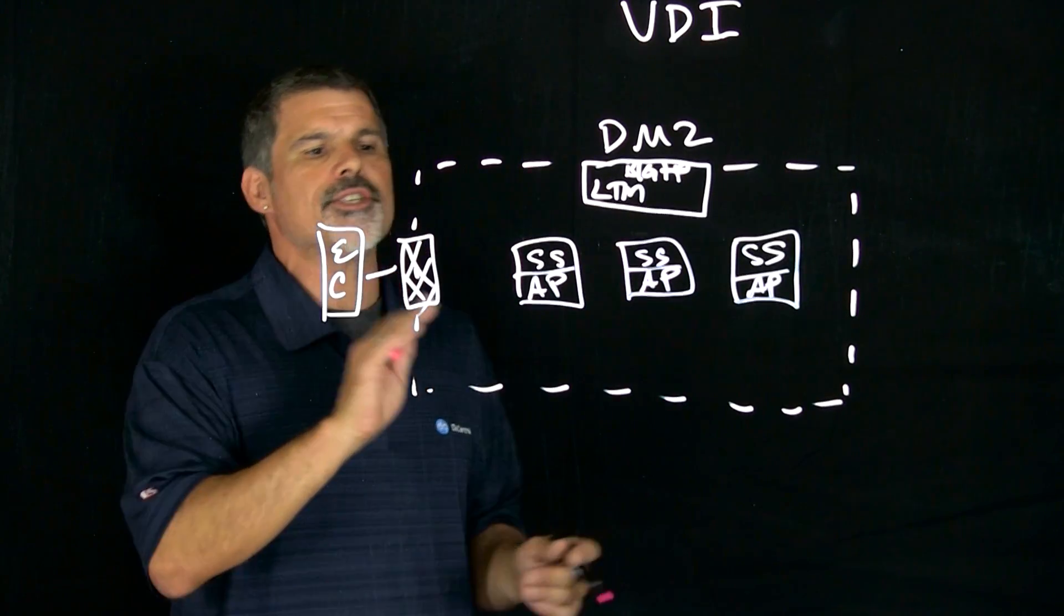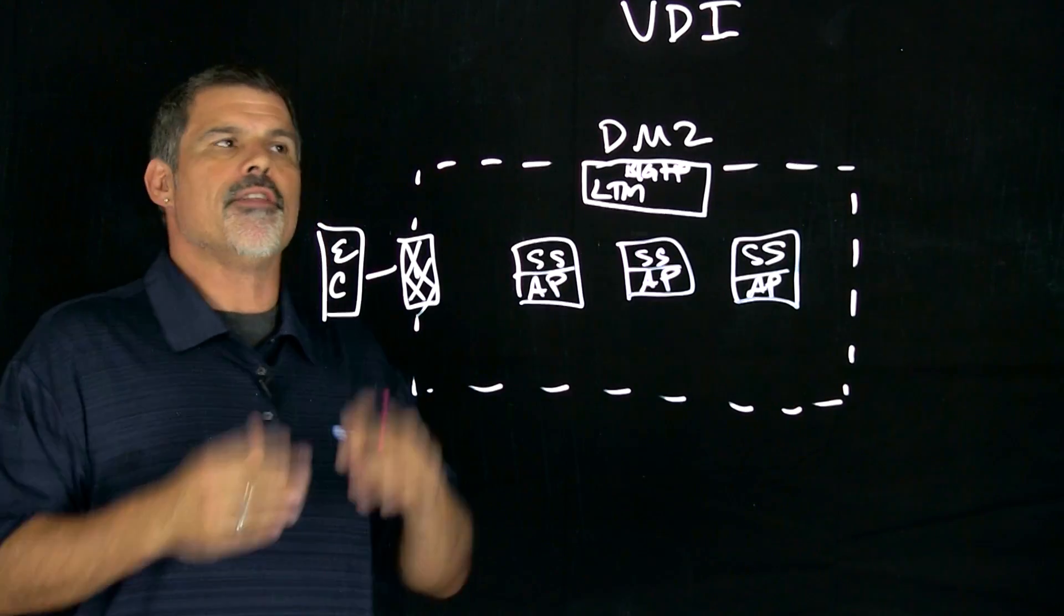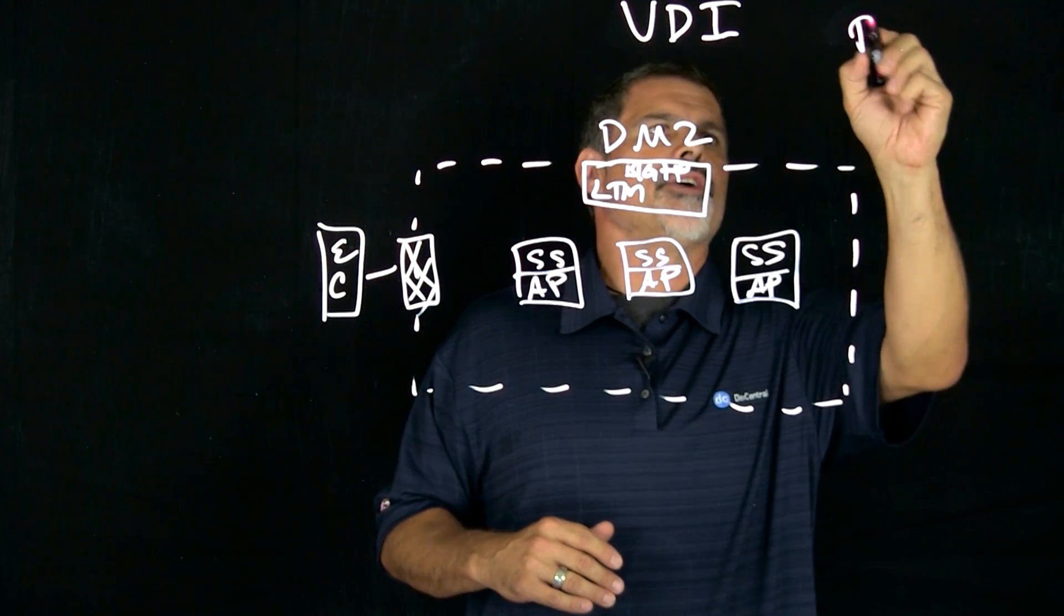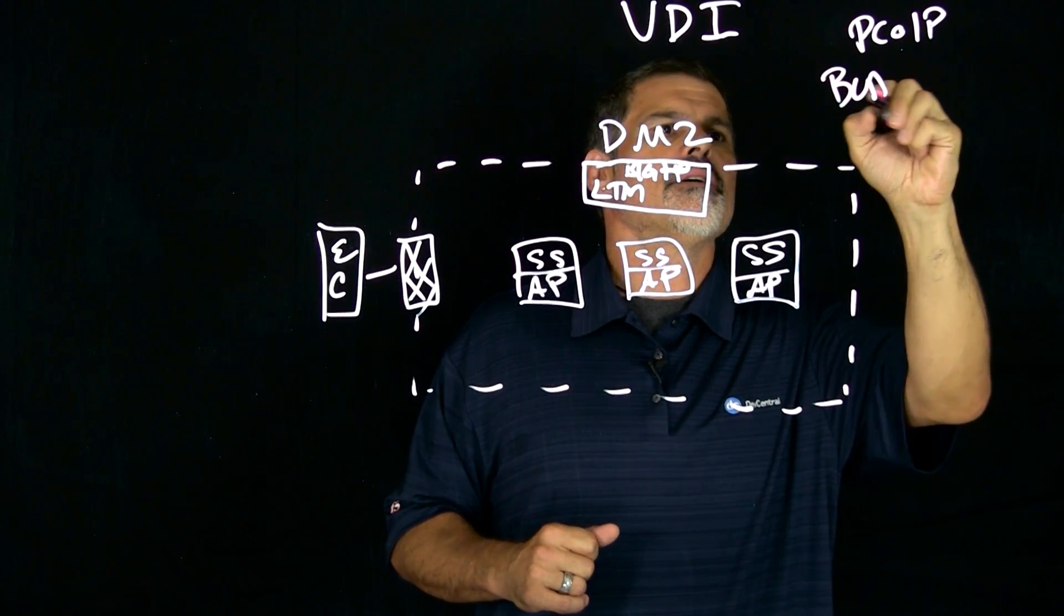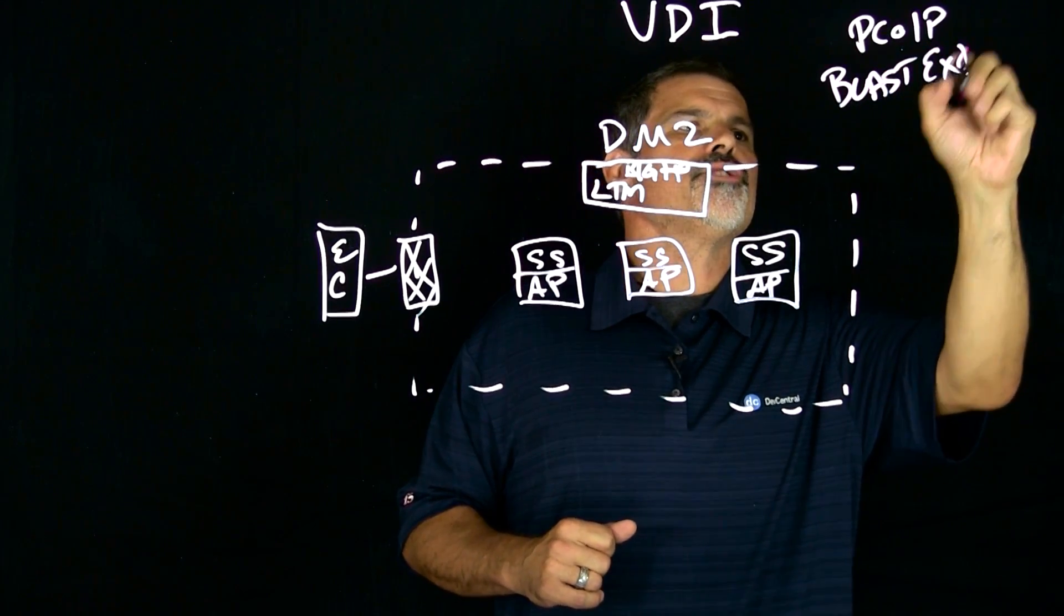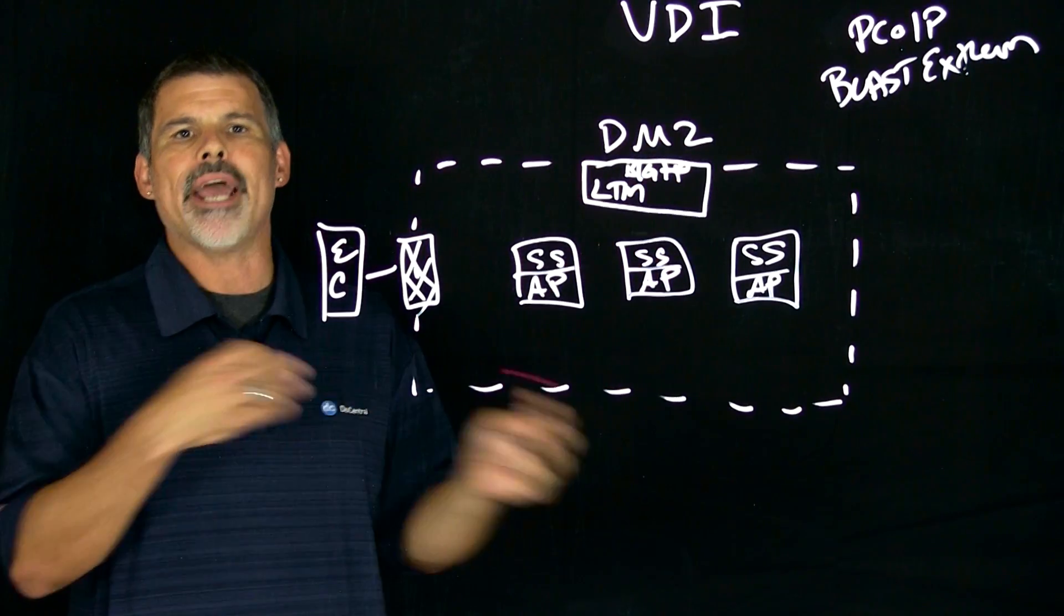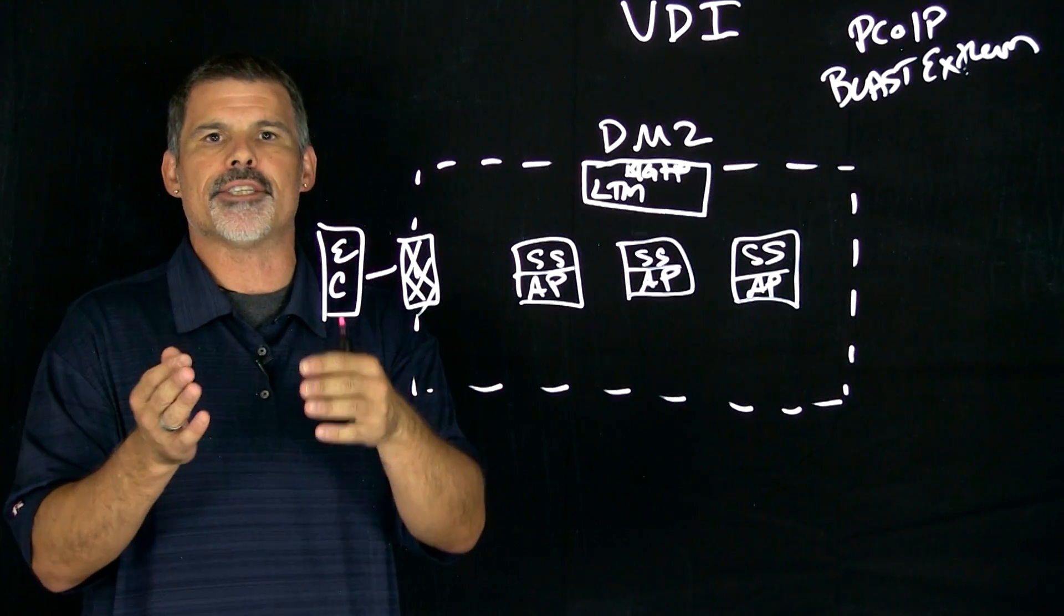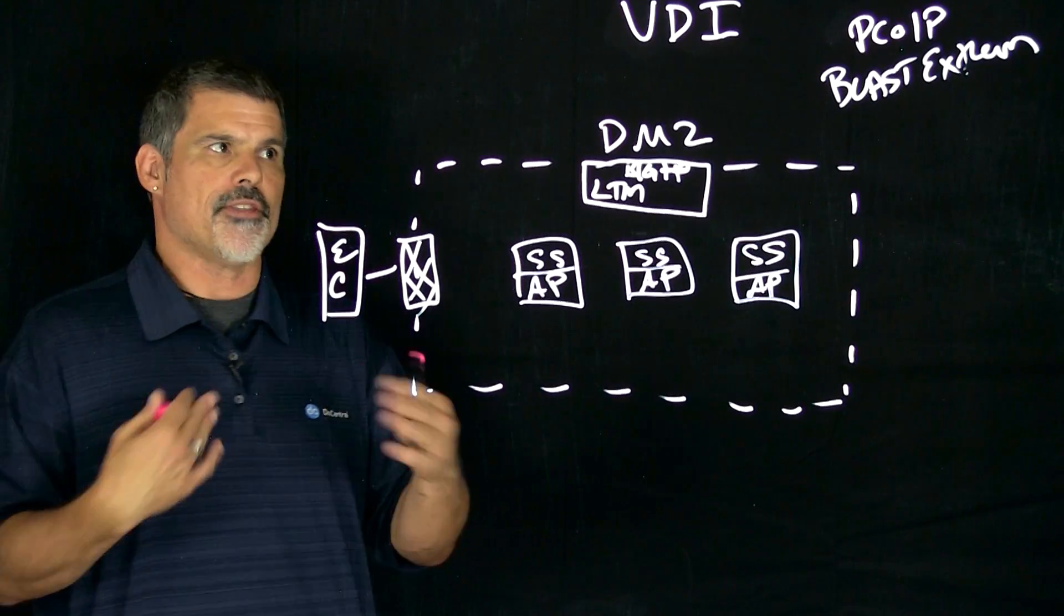What these security servers and/or access points do is they proxy the VDI, the Horizon View protocols. Those protocols are either PCOIP or Blast Extreme. And what these protocols do essentially is they're the ones that transmit the images from the virtual desktop to the clients themselves, the keystrokes, the mouse clicks, and those sorts of things.